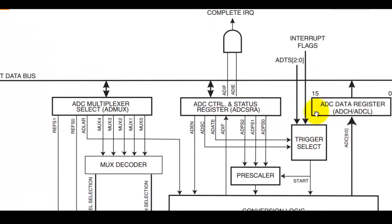This is the trigger selection logic. You can select automatic triggering using these 3 bits — the ADC Trigger Select bits 2 to 0. There are many options available for automatic ADC trigger selection: you can start the ADC when an output compare match occurs, when external interrupt 0 occurs, when a timer overflow occurs, or even when an ADC conversion completes.